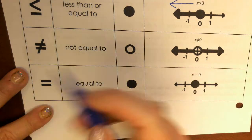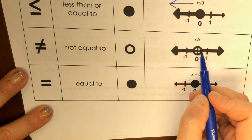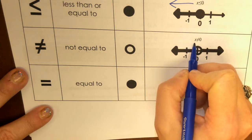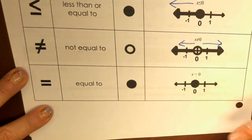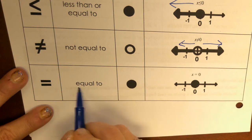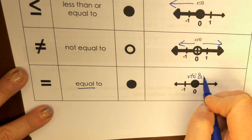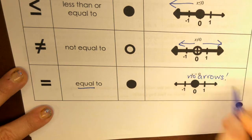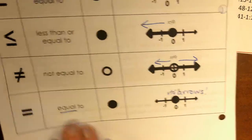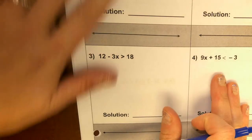Not equal to is an equal sign with a slash through it. It is still an open dot, but it goes both directions. Equal to is just a single dot filled in because it's equal, and there are no arrows. Alright, let's look at page two — these are the notes.